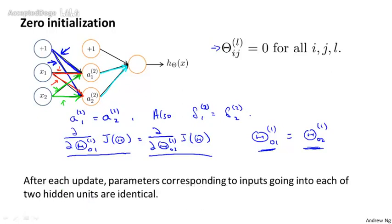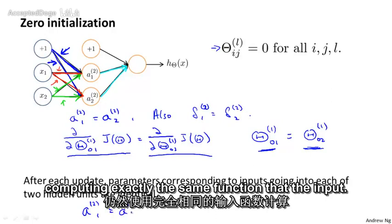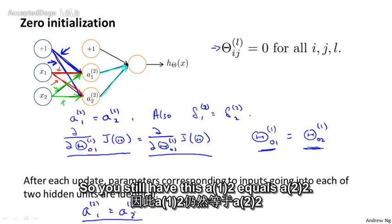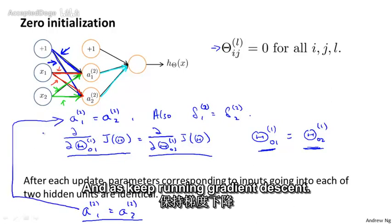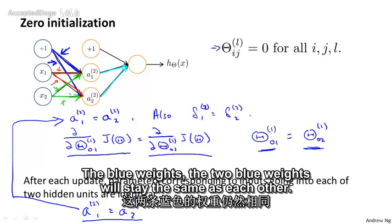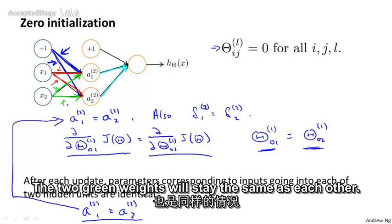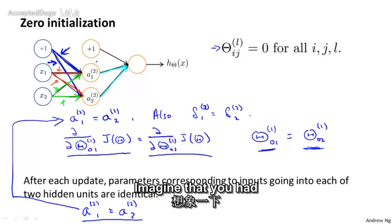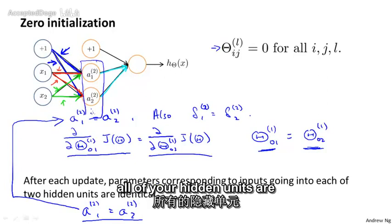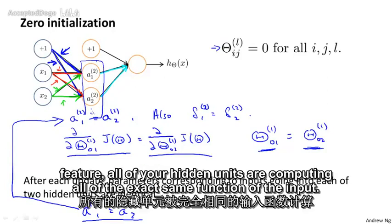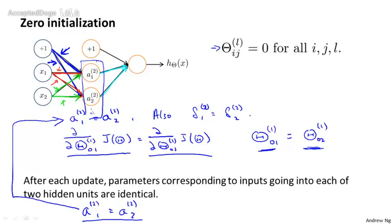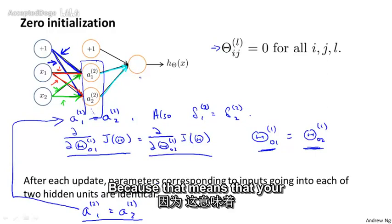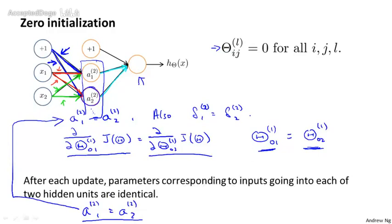What that means is that even after one iteration of gradient descent, your two hidden units are still computing exactly the same function of the input — you still have A12 equals A22. As you keep running gradient descent, the two blue weights stay the same as each other, the two red weights stay the same, and the two green weights stay the same. If you had many hidden units, all of your hidden units are computing the exact same feature, the exact same function of the input. This is a highly redundant representation, because your final logistic regression unit really gets to see only one feature, since all of these are the same.